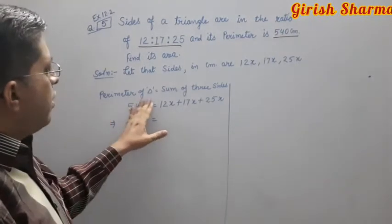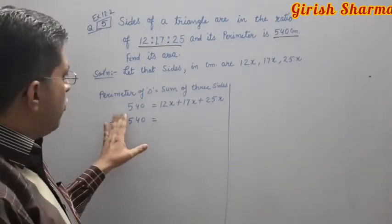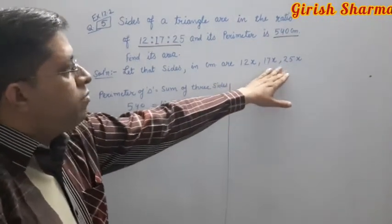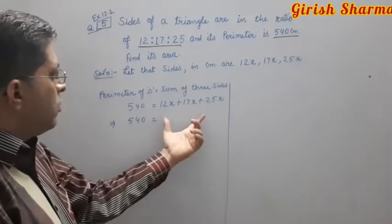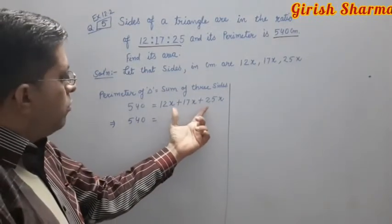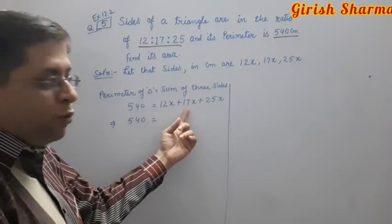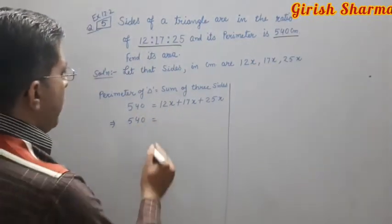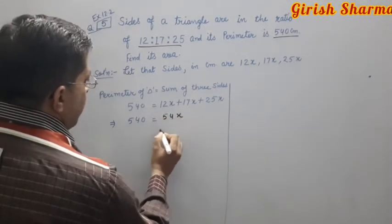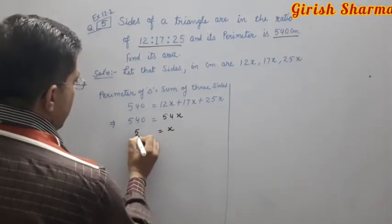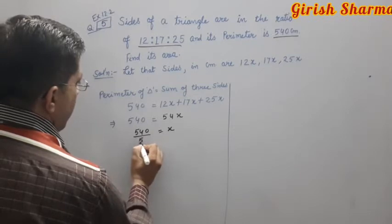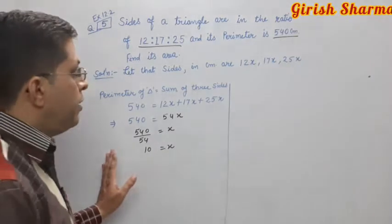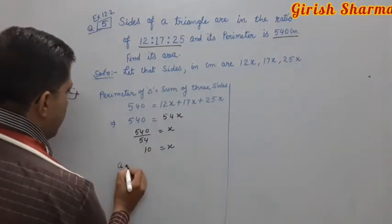Perimeter of triangle is the sum of all three sides. So 540 equals 12x plus 17x plus 25x. Adding these: 25 plus 17 is 42, plus 12 is 54, so 54x equals 540, giving x equals 10.